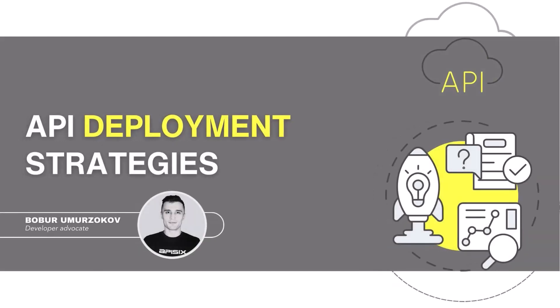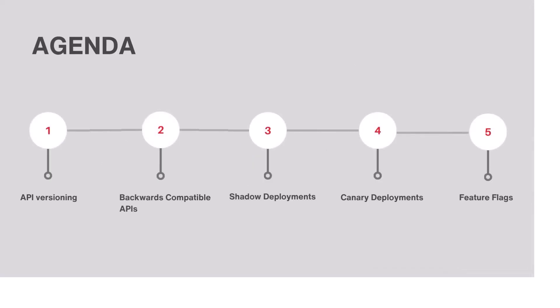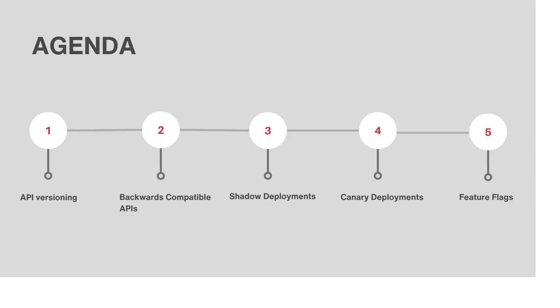Hi! Deploying changes to your APIs without impacting clients is vital in most modern software products. In this video, I will focus on some best practices and strategies you can use to make a deployment smooth for your APIs using API gateways such as Apache APISIX. During the tutorial, I will walk you through API versioning, backwards compatible APIs, and shadow and canary deployments.